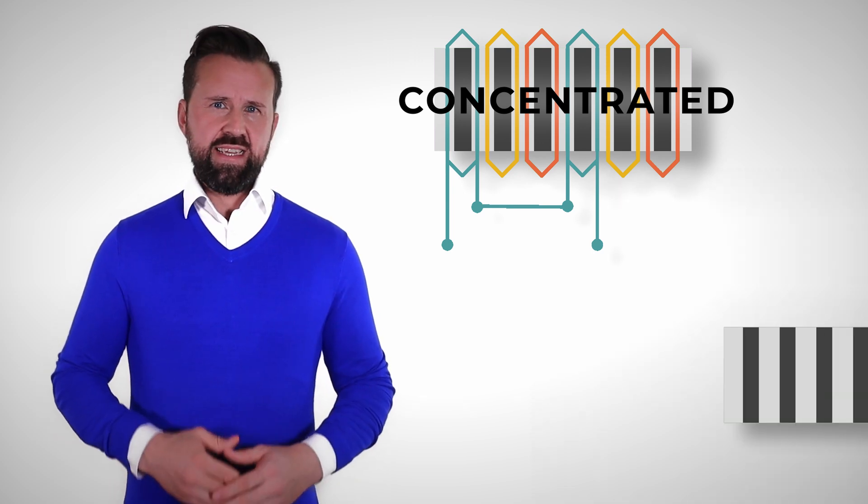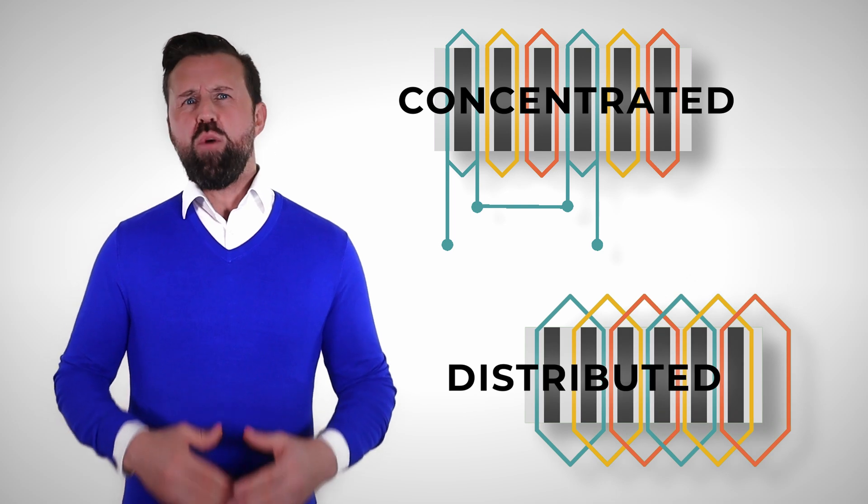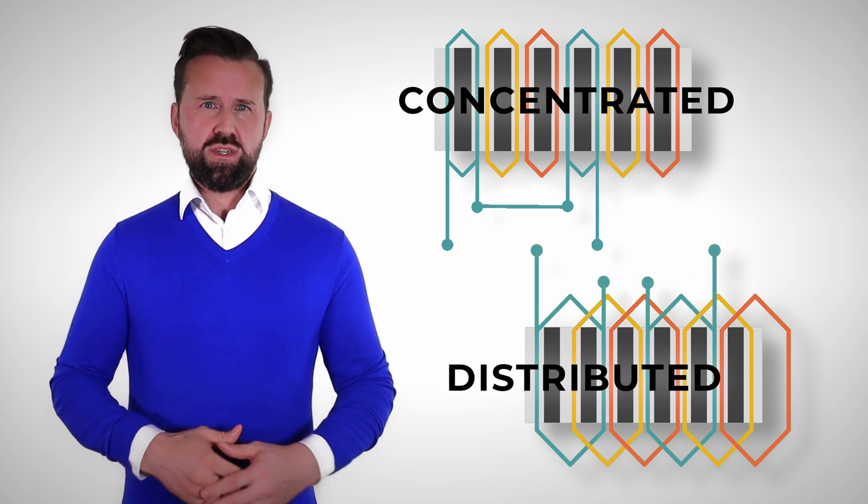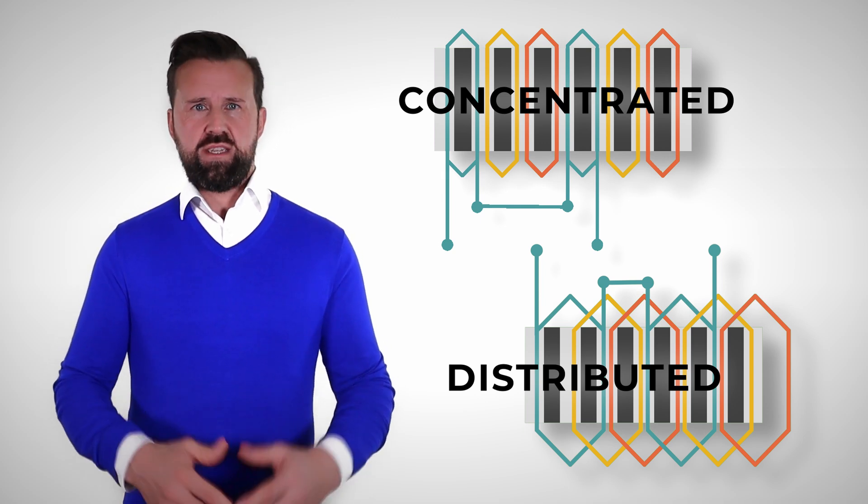With a distributed winding at least two teeth are wound, as shown in this example. Over how many teeth are wound is called coil span. And of course you can also wind over three, four, five or more teeth.